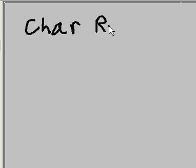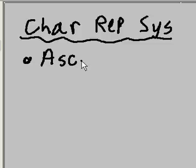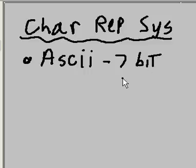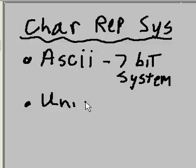Let's talk about character representation systems. We've got the old system which was ASCII — American Standard Code for Information Interchange — and that was a 7-bit character representation system. Now they have the Unicode Transformation Format, and we just call it Unicode.